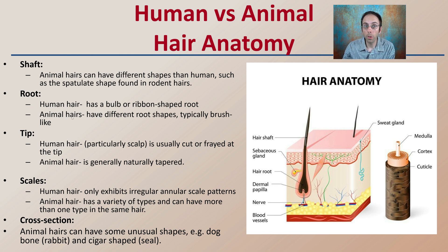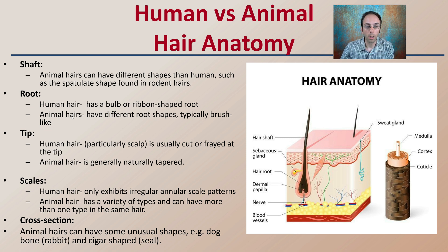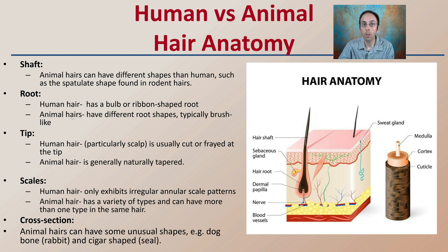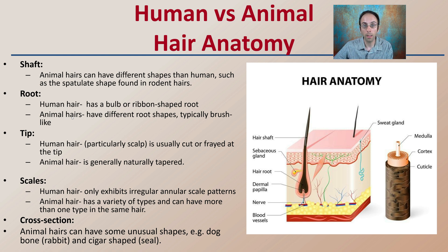Looking at the scale region of human hair, it exhibits a regular annular scale pattern, while animal hair will have a variety of types and can have more than one type within the same hair. Looking at the cross-section, animal hairs tend to have more unusual shapes — for example, a dog bone-like shape evident in rabbit hair, or a cigar shape evident in seal hair. These cross-section shapes can help you potentially identify or classify what animal the hair came from.